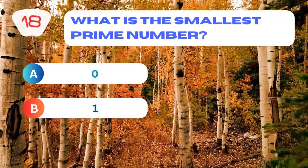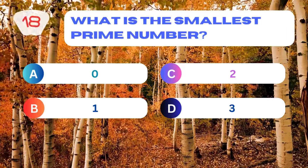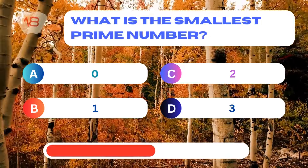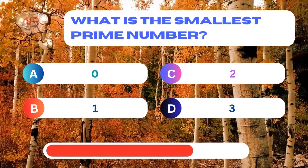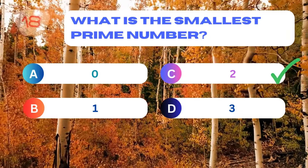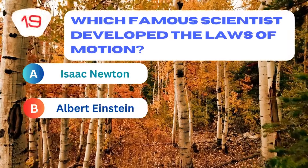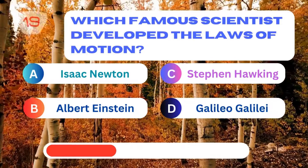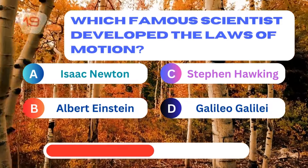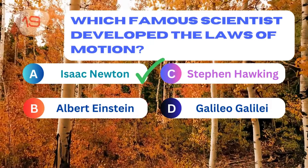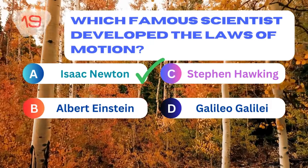What is the smallest prime number? 2. Which famous scientist developed the laws of motion? Isaac Newton.